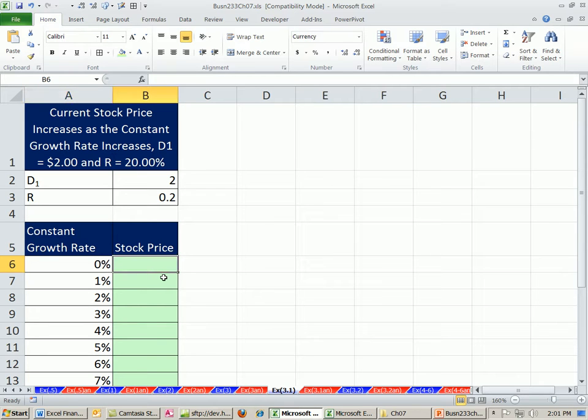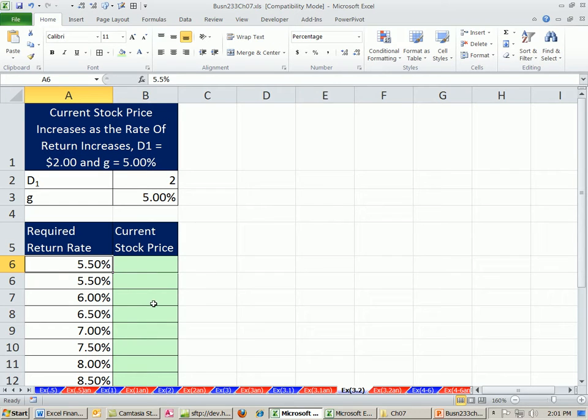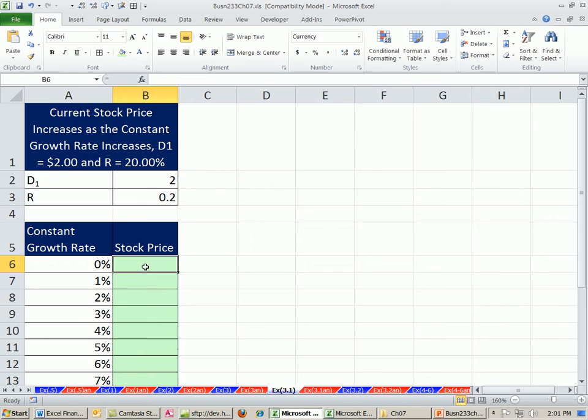In this video, actually the last video, we talked about the dividend growth model for pricing or valuing a stock. In this video, we want to see how to chart, because we have our model, and we want to see what happens to the price as the constant growth rate increases. Then we'll do a second chart and see what happens when the required return rate changes. In essence, we're going to see how one of the inputs for our model changes and what that does to the stock price.